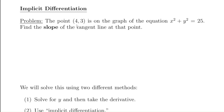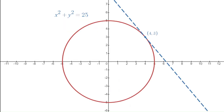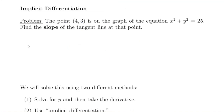Let's begin with an example. The point (4, 3) is on the graph of the equation x² + y² = 25. If you plug in 4 for x and 3 for y, you get 16 + 9 = 25. So (4, 3) really is on the graph. Find the slope of the tangent line at that point. In Desmos, the graph is a circle centered at the origin with radius 5, and the question is: what is the slope of the tangent line at (4, 3)? Notice x² + y² = 25 is not a function — it doesn't pass the vertical line test.